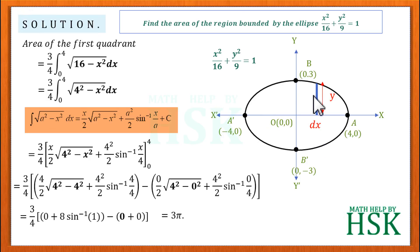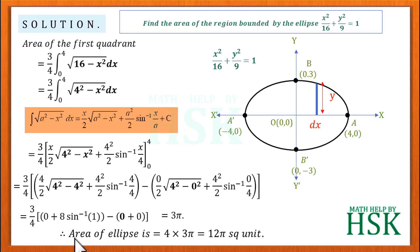The total area of the ellipse is four times the area of one quadrant, which equals 4 × 3π = 12π square units. That is how we solve this question.